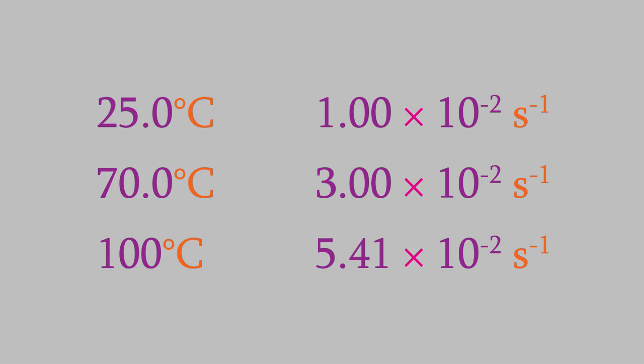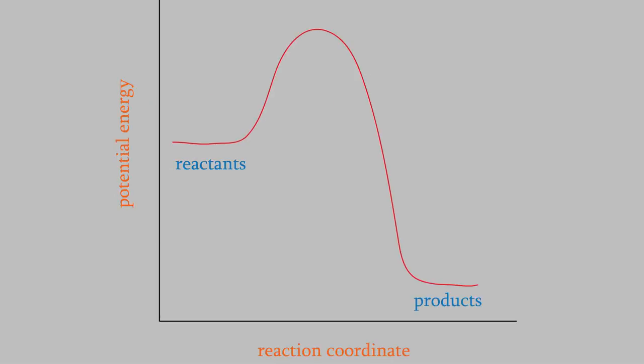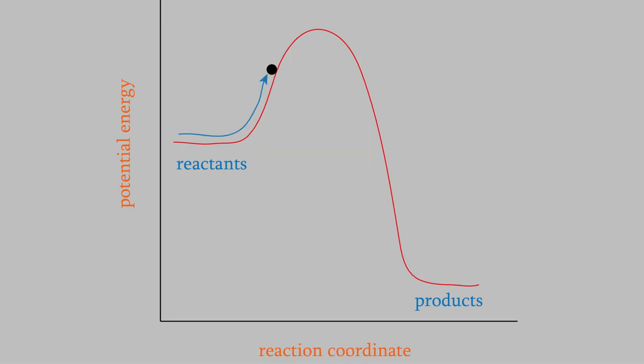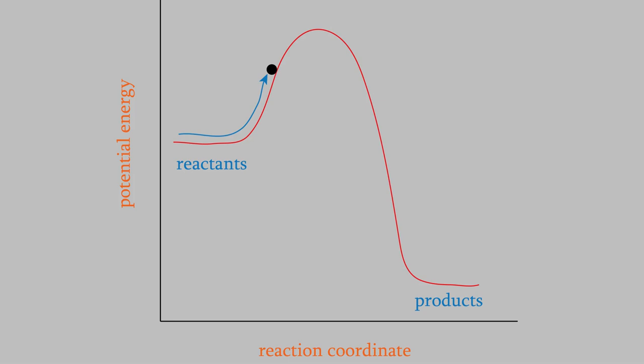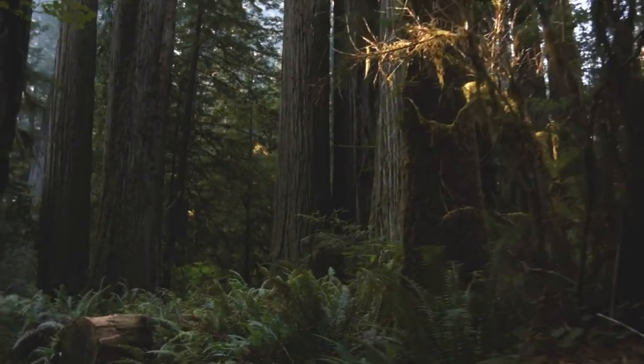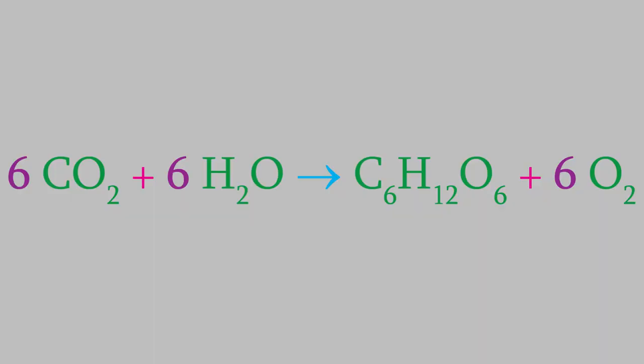However, some reactions are very slow, even at high temperatures. The reason is that the activation energy for those reactions is very high, so very few of the reactant molecules have enough energy to get over the activation energy barrier. For example, consider this reaction. Carbon dioxide and water can react to form glucose and oxygen. You might recognize this as the reaction that takes place during photosynthesis, in which plants convert CO2 into oxygen. This reaction has an incredibly high activation energy of 15,144,000 joules per mole. As a result, this reaction is so slow, it's essentially impossible, even at high temperatures.